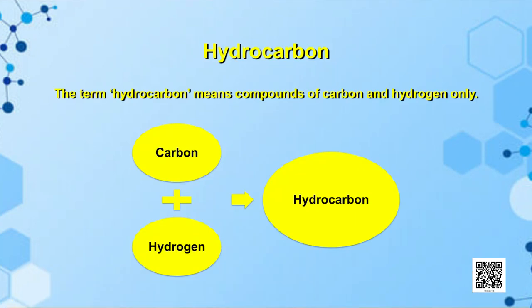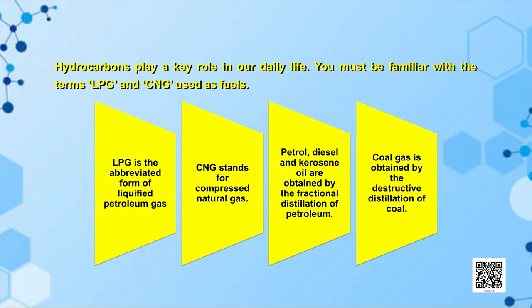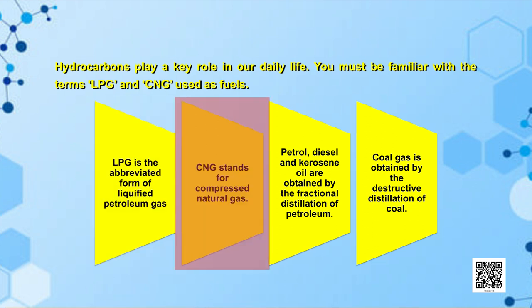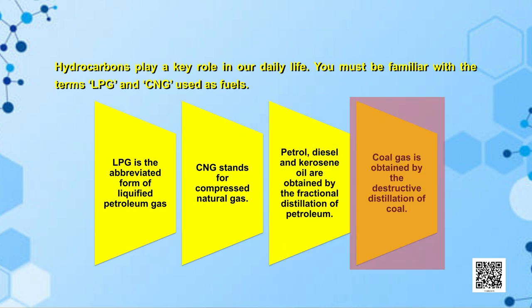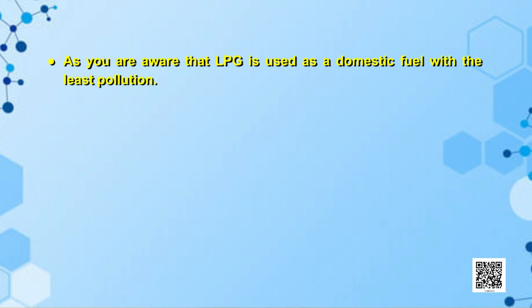First, let us have an introduction of hydrocarbons. The term hydrocarbon means compounds of carbon and hydrogen only. Hydrocarbons play a key role in our daily life. You must be familiar with CNG and LPG which are used as fuels. LPG is the abbreviated form of Liquefied Petroleum Gas, whereas CNG stands for Compressed Natural Gas. Petrol, diesel and kerosene oil are all obtained by the fractional distillation of petroleum. Coal gas is obtained by the destructive distillation of coal. LPG is used as domestic fuel with the least pollution.